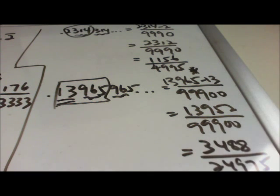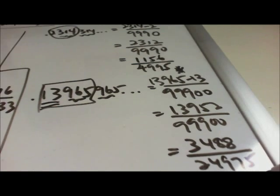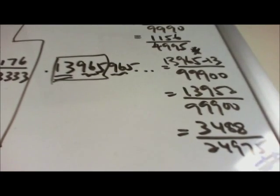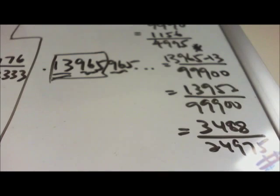So 3488 over 24975. This is not divisible by any number, so this is your final answer. Hopefully this will be helpful.